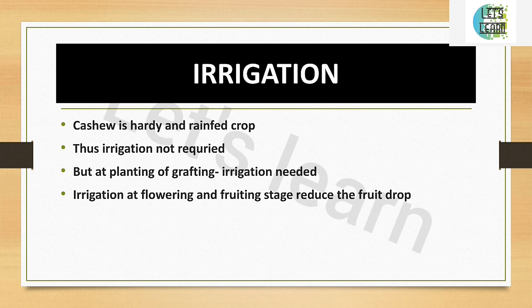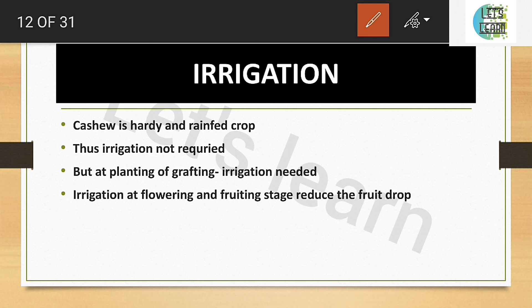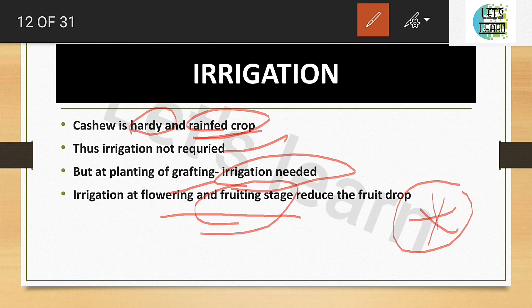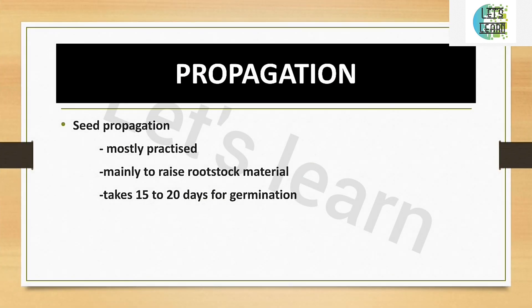Cashew is a hardy, rainfed crop and does not require much water. Rainfall is generally sufficient. However, if grafted plants are used, irrigation is definitely needed. Irrigation at the flowering and fruiting stage will reduce fruit drop. This is an important exam point — irrigation is not normally required, but it is essential for grafted plants and at flowering/fruiting stages.